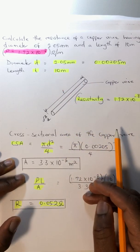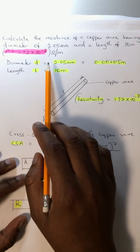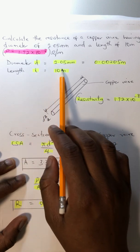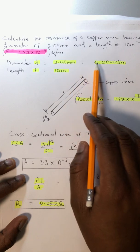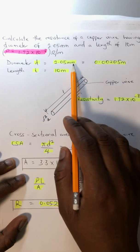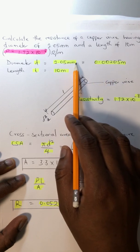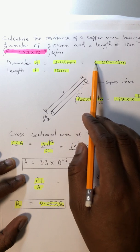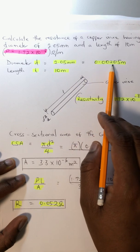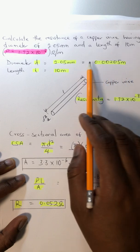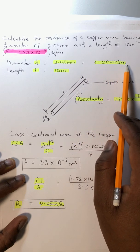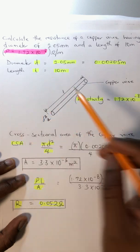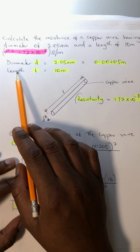We have a diameter given: d equals 2.05 millimeters. We can convert it to meters by multiplying by 10^-3, which gives us 0.00205 meters. Also, our length is given, which is 10 meters.